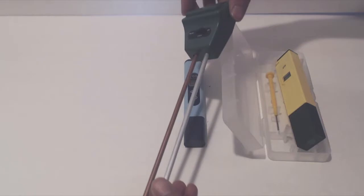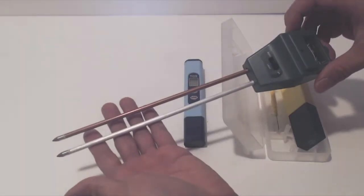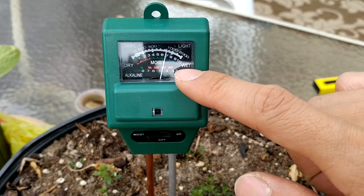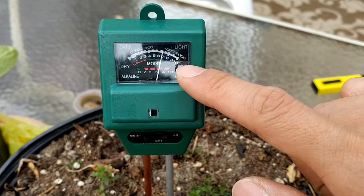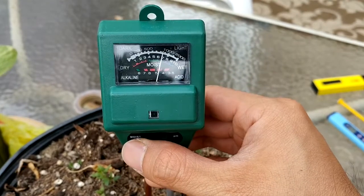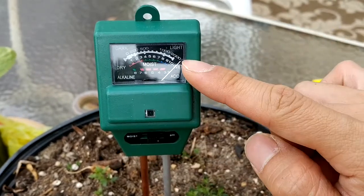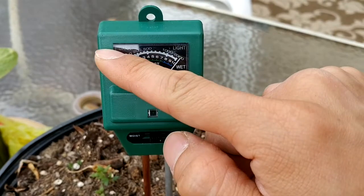The soil monitor is super easy to use and read, and it does not require any batteries. Just stick it in the dirt next to your plant or in the area you want to measure, and read the measurements on the meters. There's a switch on the unit that allows you to change the reading from moisture to light to pH.